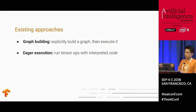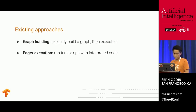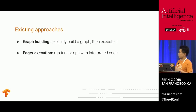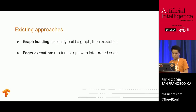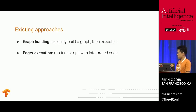Traditionally, there are two ways of building models in Python. One way is graph building — users are required to explicitly build a graph and run it, passing it to a session at runtime. The other way is eager execution, which allows you to write everything in source code and interpret it line by line. It's really easy to use. But there's a tension: graph execution has great performance but is not very easy to use, especially with control flow. Eager execution is super easy to use, but can be challenging to achieve high performance.